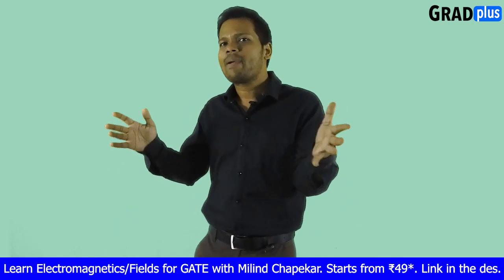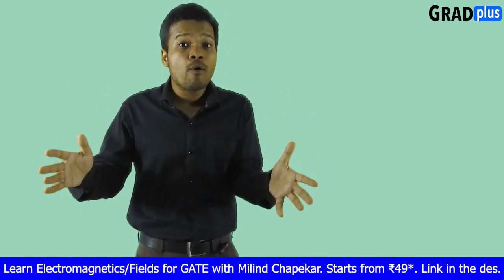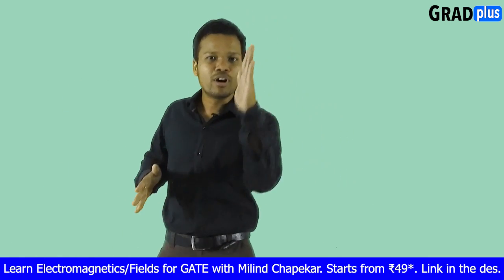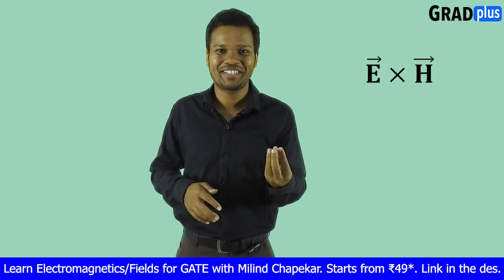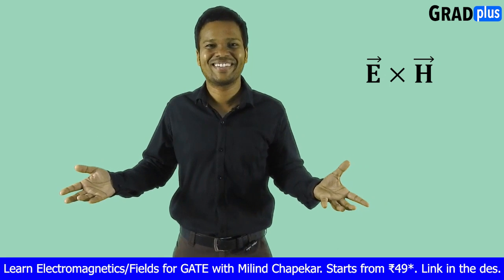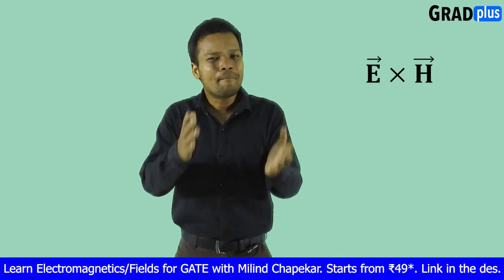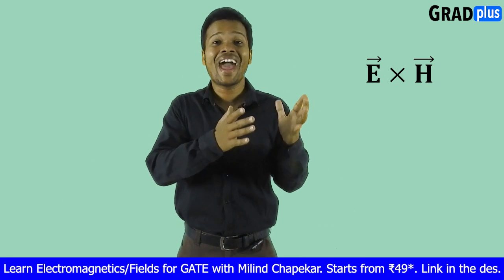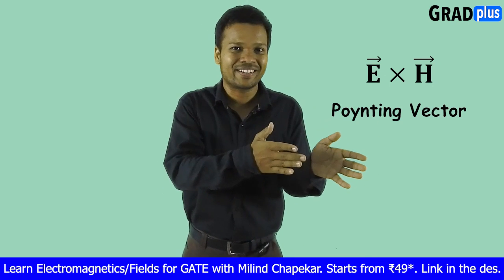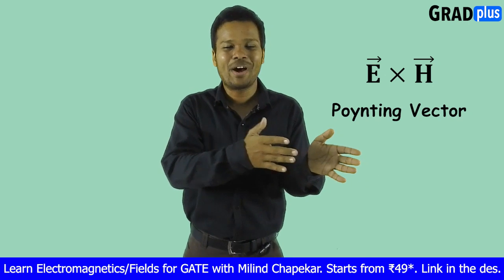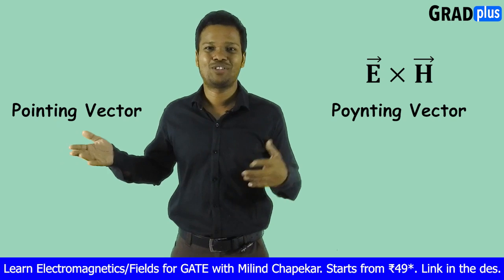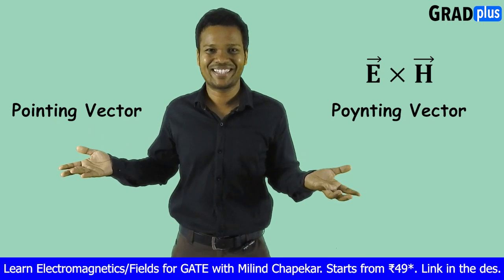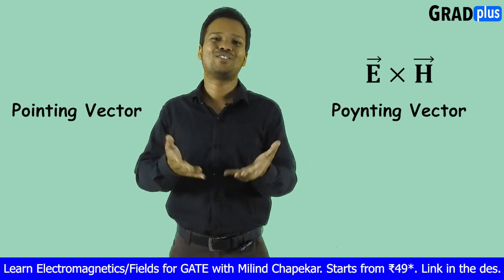While studying electromagnetic wave propagation, you must have learnt about this vector, E cross H. What is this vector? Some people call this the Poynting vector, while some people call it the Pointing vector. So which one is correct? Let's see in this video.